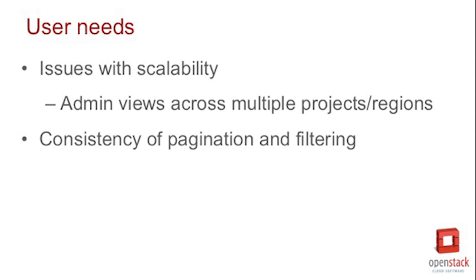From a user needs perspective in this cycle, what are some of the items you're hearing about from users and what are you doing to address them? There are a couple of things that repeatedly come up. Issues with scalability, specifically on the dashboards themselves when you start looking into the admin views across multiple projects and regions at once — that tends to get very non-performant. We also have a lot of inconsistencies with things like pagination and filtering because of the implementations in the different projects. One of the things we're probably going to use in the future is plug into the Searchlight project and use that to give us a cache layer that we can build on to get consistent paging and filtering search.